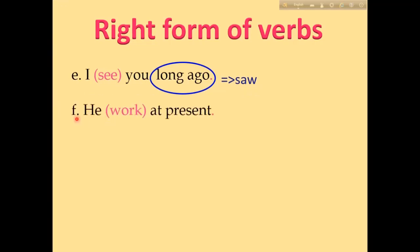Number F: 'He works at present.' The phrase 'at present' is used in present continuous tense. In present continuous tense, am/is/are plus verb-ing is used. 'Work' is the verb here, so the correct form is 'is working.'